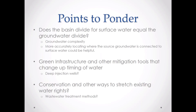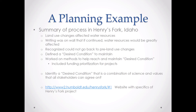Some points to ponder: Does the basin divide for surface water equal the basin divide for groundwater? Groundwater complexity — where is it connected? Other mitigation tools include green infrastructure, deep injection wells, conservation of water, ways to stretch existing water rights, wastewater treatment methods, and potentially some flexibility in consumption amounts for permits that predate the Smith River ruling. On planning: one favorite example is the Henry's Fork, where stakeholders defined a desired condition combining science and values that all parties agreed on, using it for planning and funding prioritizations.